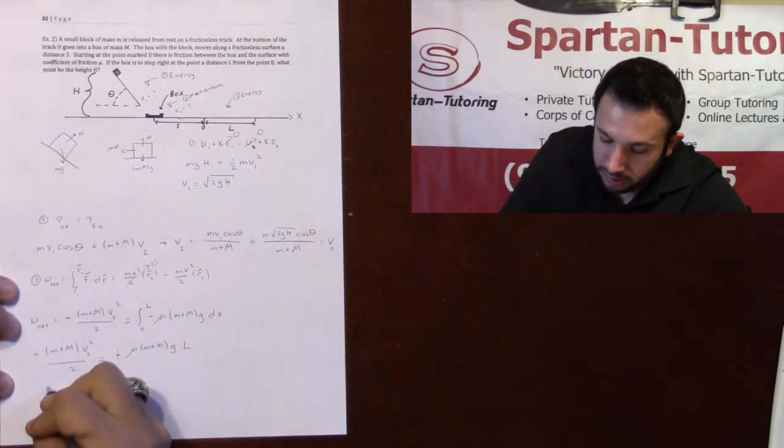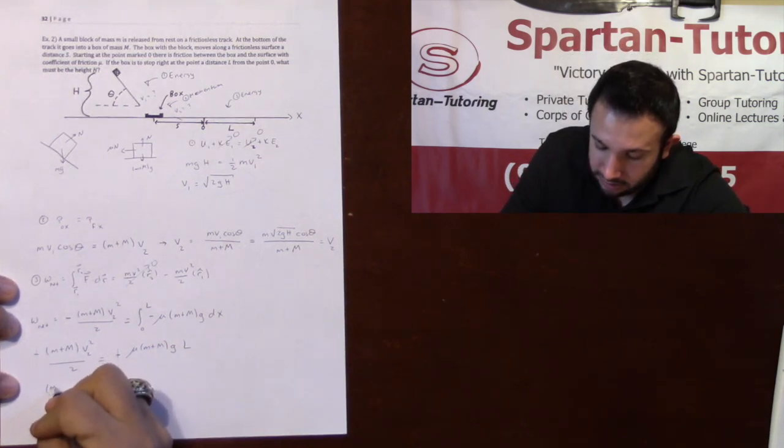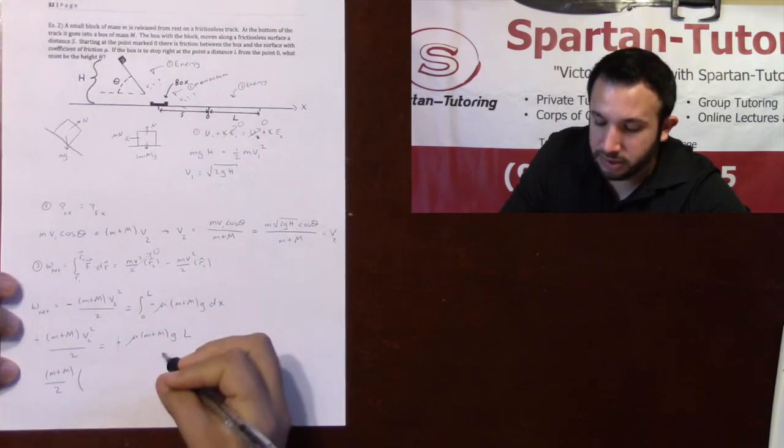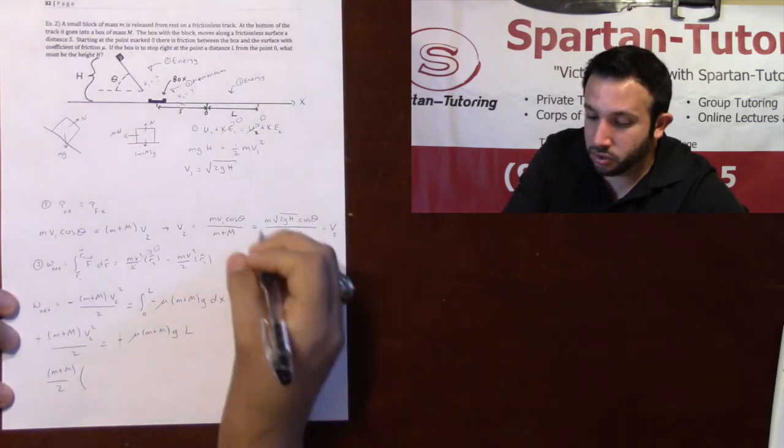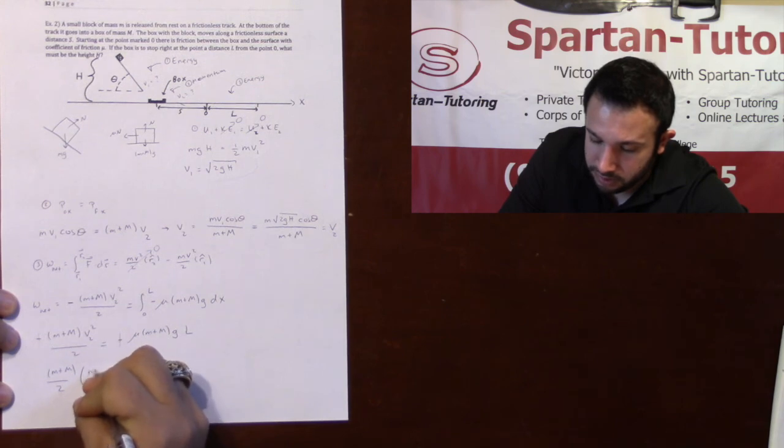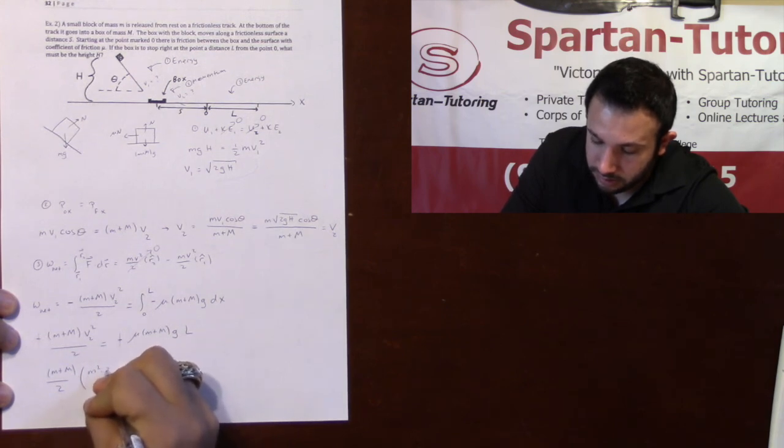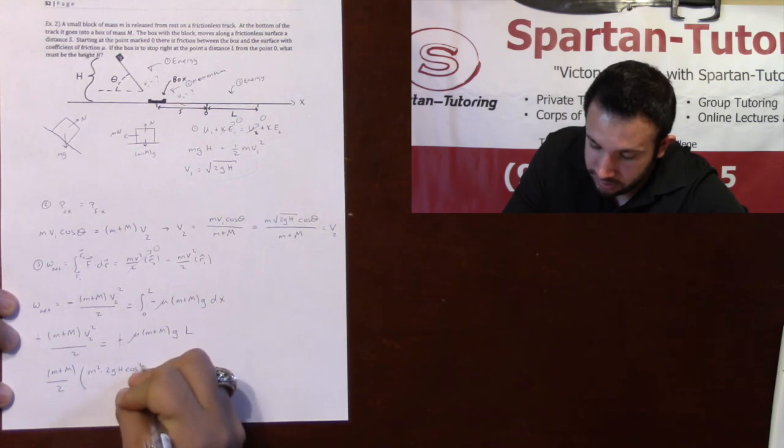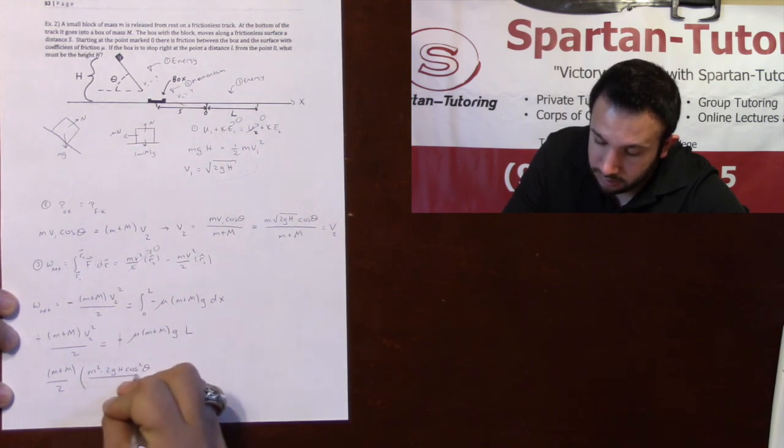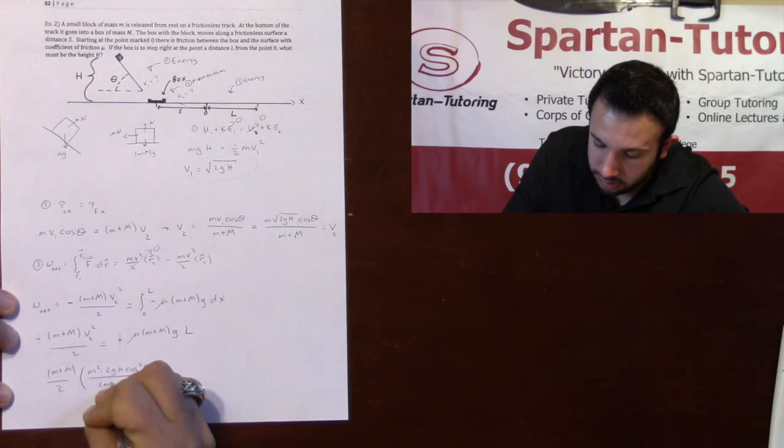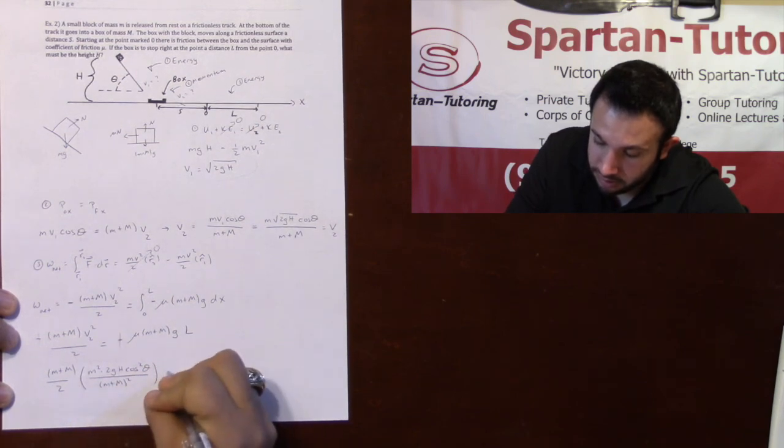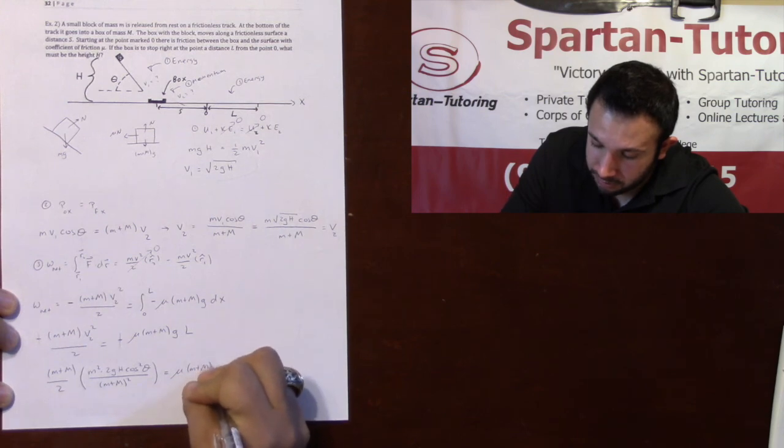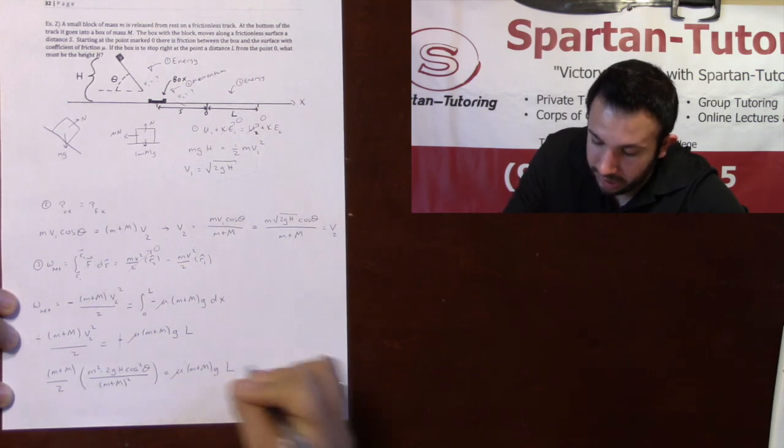And so what I'm going to do is I'm going to say this is little m plus capital M over 2 times V2 squared. Squaring all of this, this will be little m squared times 2gh times cosine squared theta over little m plus capital M squared is equal to mu little m plus capital M G L.